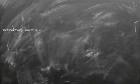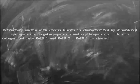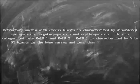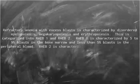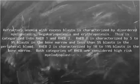Refractory anemia with excess blasts is characterized by disordered myelopoiesis, megakaryopoiesis, and erythropoiesis. This is categorized into RAEB1 and RAEB2. RAEB1 is characterized by 5-9% blasts in the bone marrow and less than 5% blasts in the peripheral blood. RAEB2 is characterized by 10-19% blasts in the bone marrow. Both categories of RAEB are considered high-risk Myelodysplastic Syndrome.